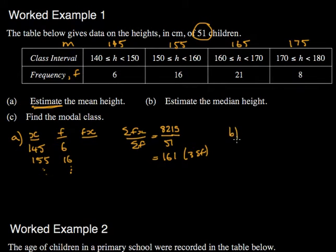To find b, the median height, that would be the middle person. Now if there are 51 people, I'd have to do 51 plus 1 divided by 2. And this would be the 26th value.